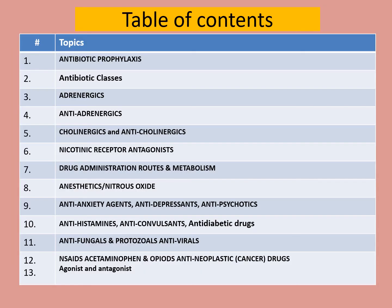This is the table of contents that we are going to study: antibiotic prophylaxis, antibiotic classes, adrenergic drugs, anti-adrenergic, cholinergic, anti-cholinergic, nicotine receptor antagonist, drug administration route and metabolism, anesthetics, nitrous, anti-anxiety, anti-depressant, anti-psychotic, anti-histaminic, anti-convulsant, anti-diabetic or oral hypoglycemic, antifungal and protozoal, antiviral, anesthetics, acetaminophen, opioid, cancer drugs, hypoglycemic, and agonist and antagonist.